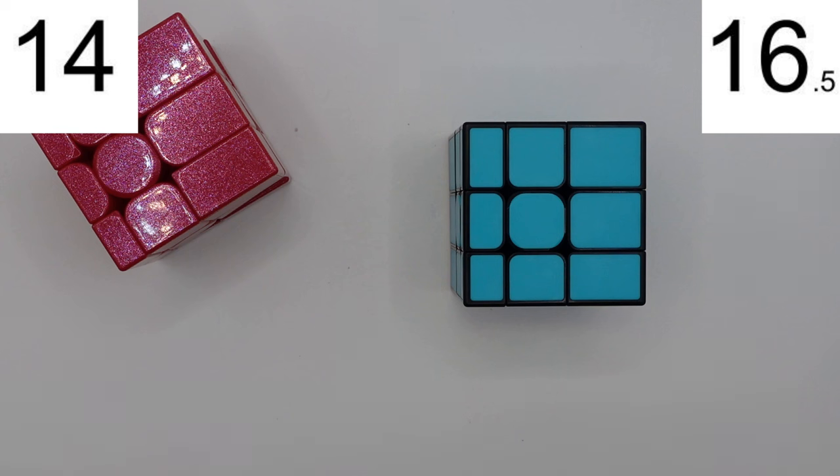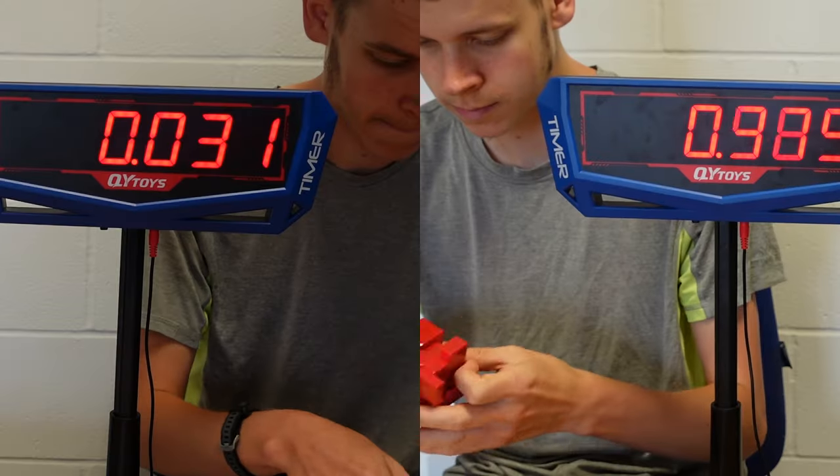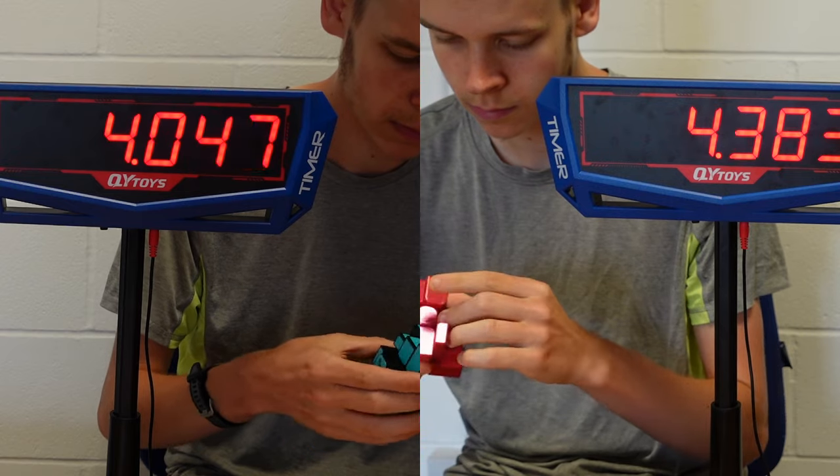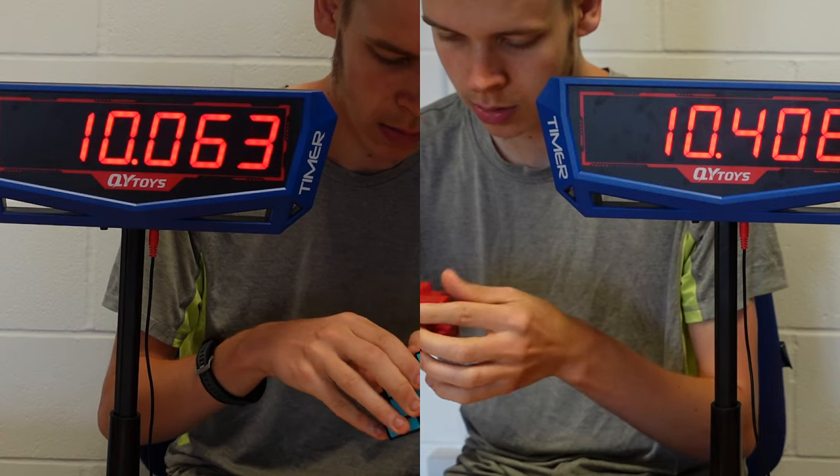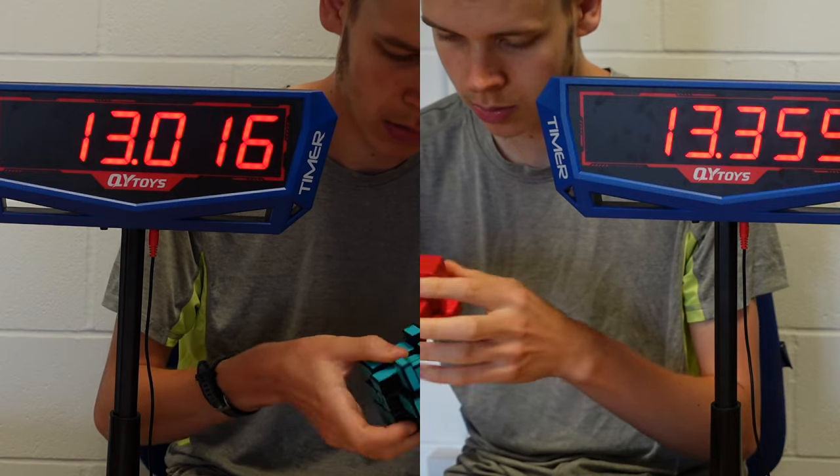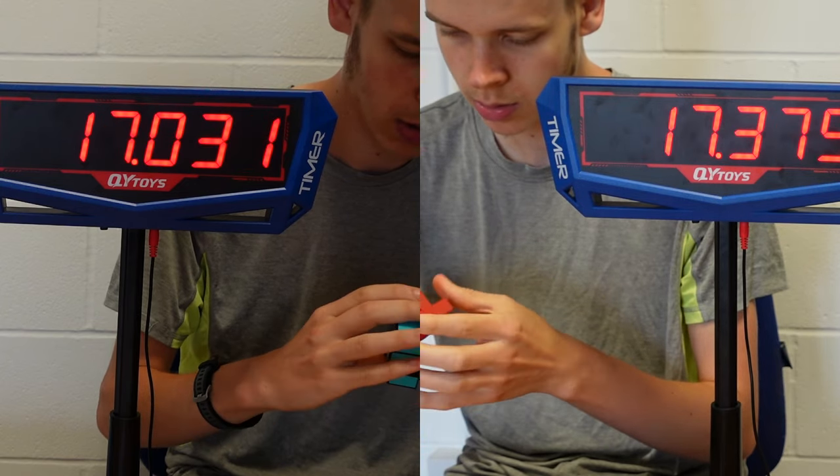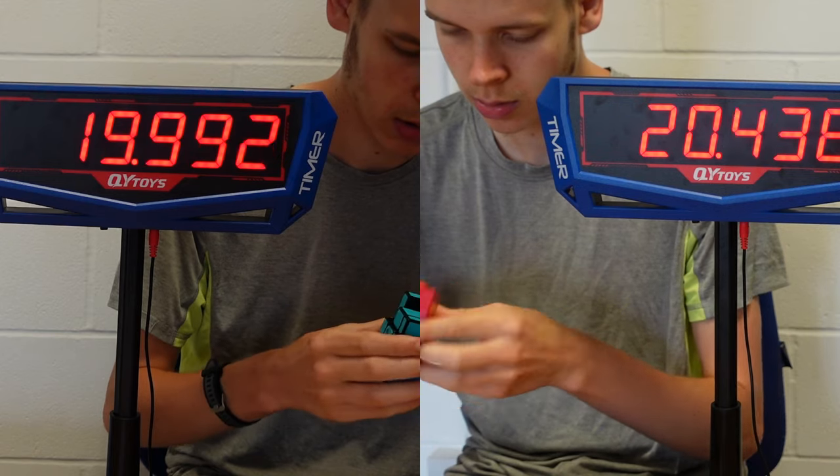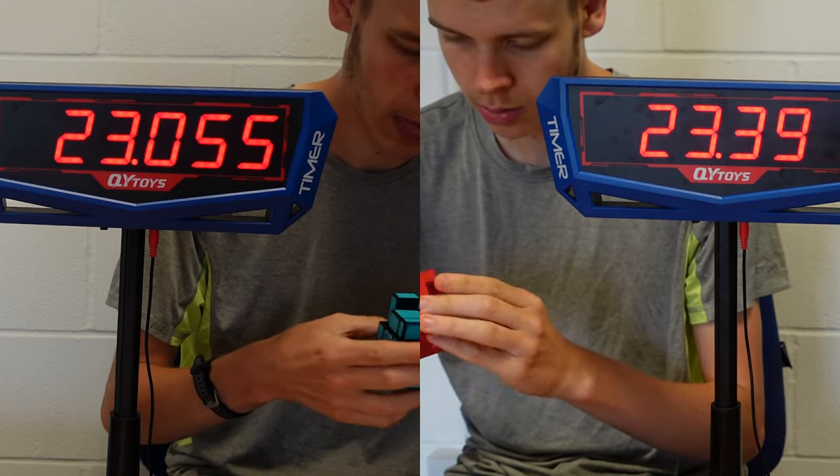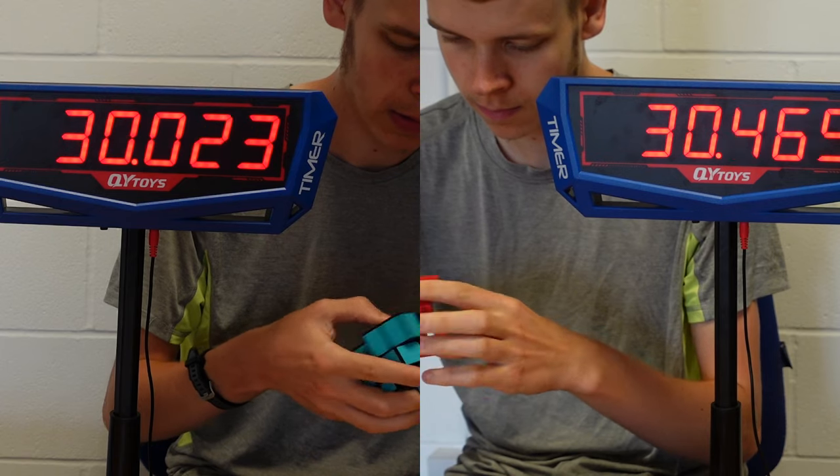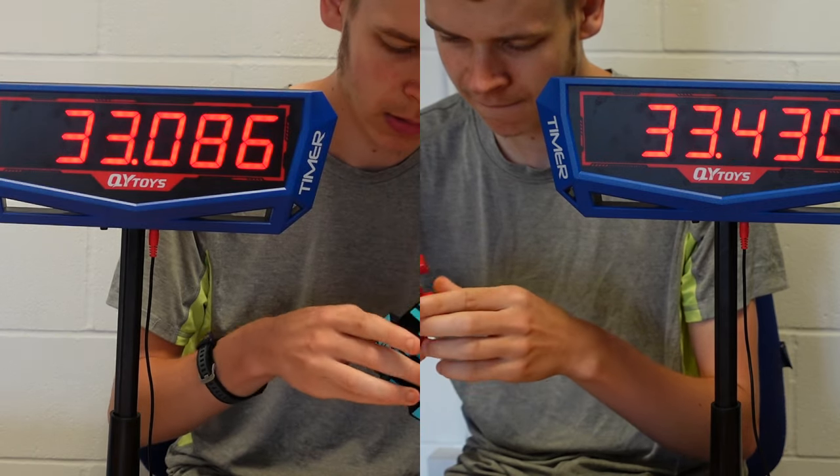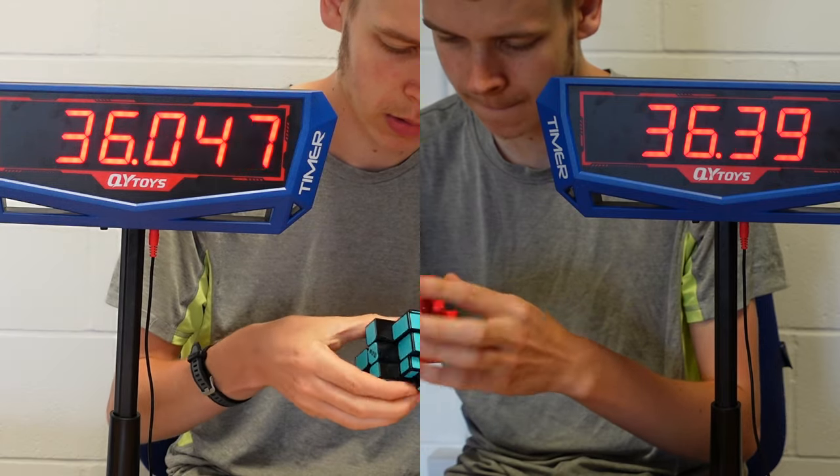I guess that moves on to the final test, me actually solving them both. I'm going to do one solve on each of them. That isn't really going to say much, but it's going to say something. Unfortunately my editing kind of messed up here, but I've still got two solves: one with the Chi mirror cube on the left and one with the GAN mirror on the right.